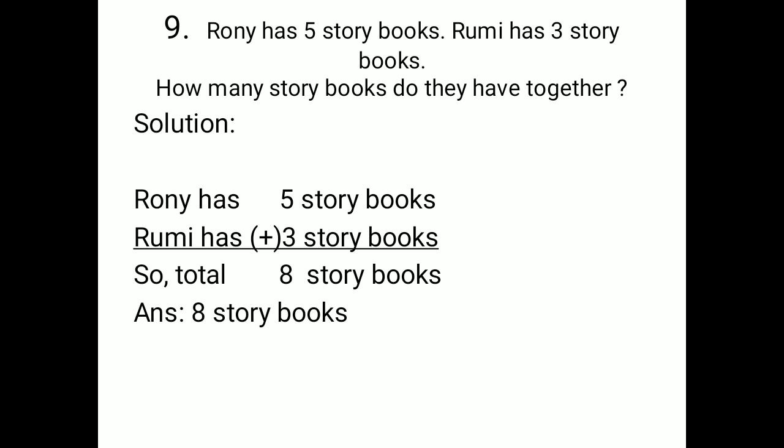Number 9: Ronnie has 5 story books. Rumi has 3 story books. How many story books do they have together?